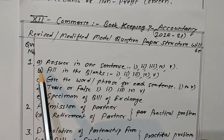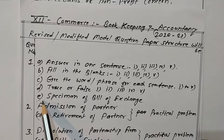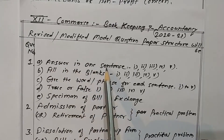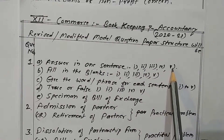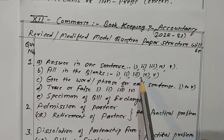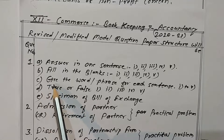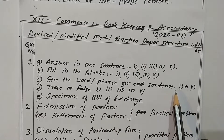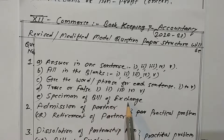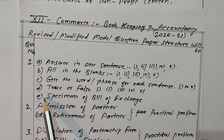Question number one has five sub-questions: A, B, C, D, and E. Out of these, only four questions are required to be solved. Part A: Answer in one sentence — sub-questions one to five. Part B: Fill in the blanks — sub-questions one to five. Part C: Give the word or phrase for each sentence — questions one to five. Part D: True or false — questions one to five. Part E: Draw a specimen of a bill of exchange — the format of a bill of exchange. Out of five questions, only four are required to be solved.